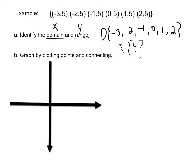The second part of this problem is to graph by plotting points and connecting. So we have negative 3, 5; negative 2, 5; negative 1, 5; 0, 5; 1, 5; 2, 5. So if we connect these points, then we just have a horizontal line.